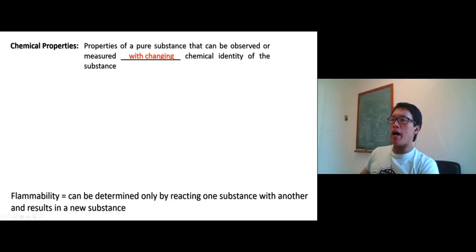All right, the chemical properties are properties of a pure substance that can be observed or measured with changing chemical identity of the substance. So whatever you do with it chemically, it changes the chemical identity. So that substance is not it anymore. It changes to something else.